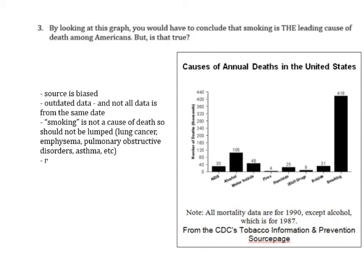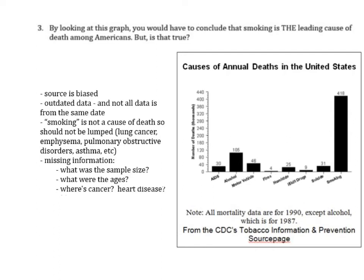There is also a lot of missing information in this graph. For instance, it would be nice to know what the sample size was — was the sample size the same across all categories, or were there just more people in the smoking category? What were the ages? The smoking group could have been older people who would have died anyway. And a couple of big things missing are cancer and heart disease, which are not included. Those could have a much higher bar than smoking — did they purposefully leave those out to make smoking look bigger?